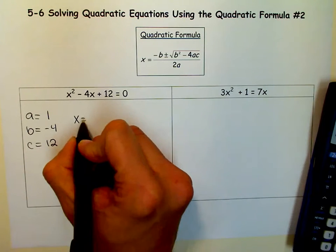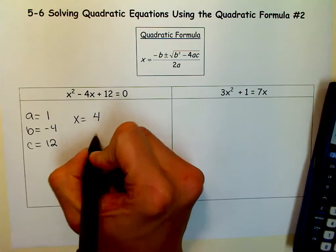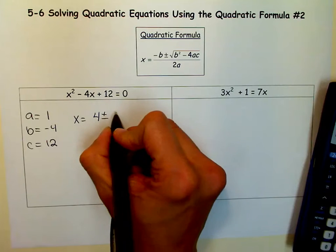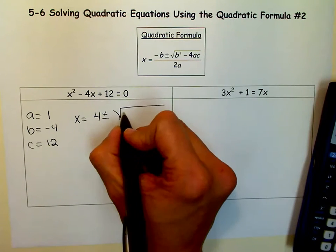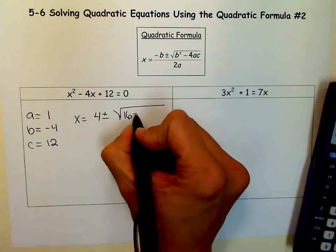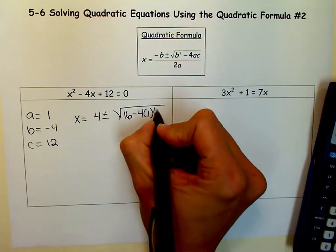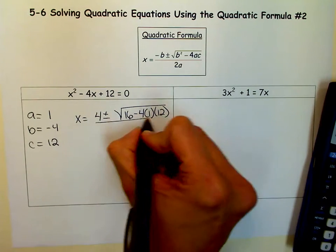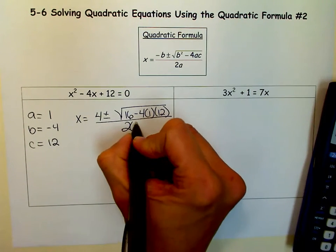And now we're ready to write x equals negative b, the opposite of b, plus or minus the square root of b squared, which is 16, minus 4 times a times c, all over 2 times a.